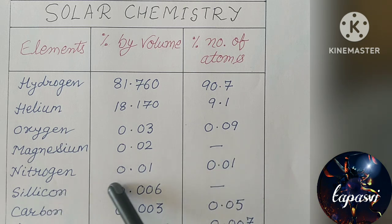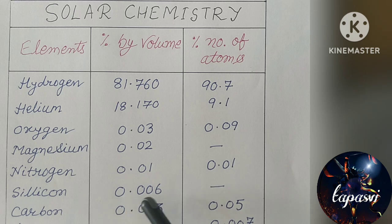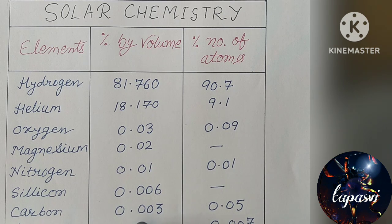Nitrogen: 0.01 percent by volume, 0.01 percent number of atoms. Silicon, carbon, and iron are respectively 0.006, 0.003. Actually, these three are negligible and not important for your examination, but I have given them here.